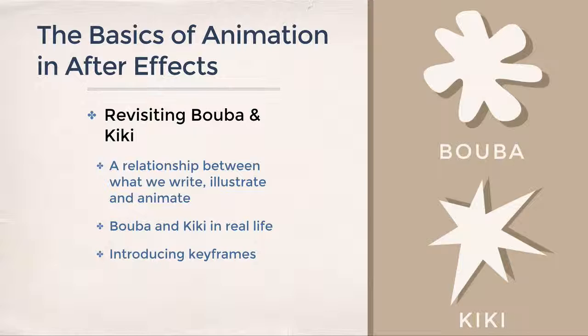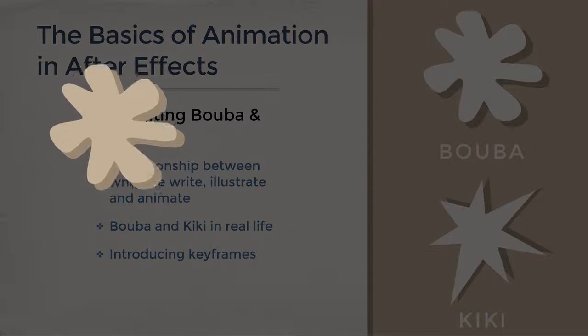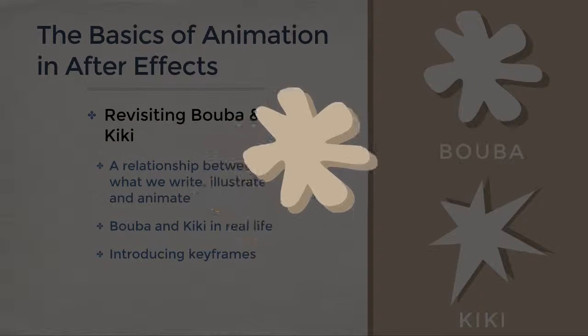I want to start this module by reintroducing Booba and Kiki. You remember them from module one on scriptwriting when I explained how what we write is deeply connected to what we see on screen. Now in the animation module, I'd like to develop this concept further so you understand the fundamentals of animation. We're now looking at Booba and Kiki from the standpoint of actual motion rather than just illustration. Let's see what they might look like in real life if they had a heartbeat. Booba might be expected to waver a little, laze about before getting to the other side.